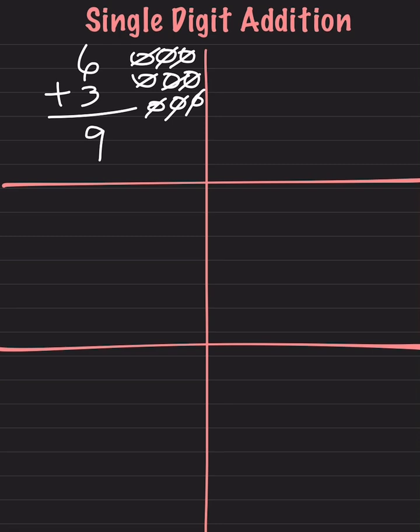We could have also done mental math. We can start at 6 and then add 3 more to see what our answer is. So we start at 6, then we add 3 more: 7, 8, 9. And our answer is 9.